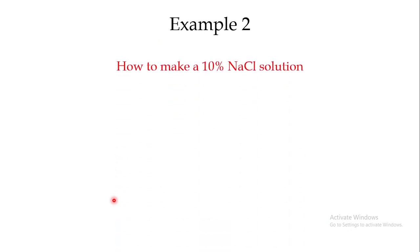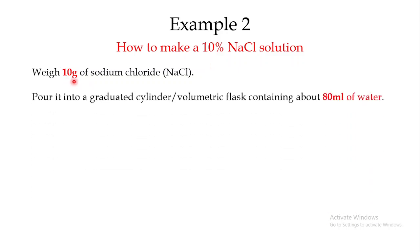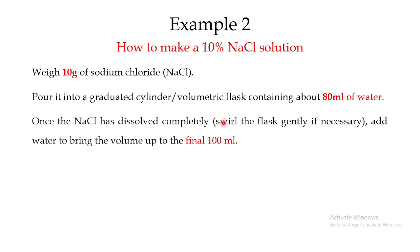Let us have another example. If you are asked to make a 10% sodium chloride solution, the first thing you have to do is take 10 grams of sodium chloride. Then pour it into a graduated cylinder or a volumetric flask containing about 80 ml of water. You should not directly take 100 ml of water.